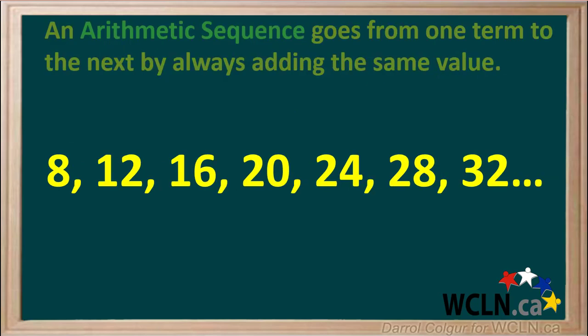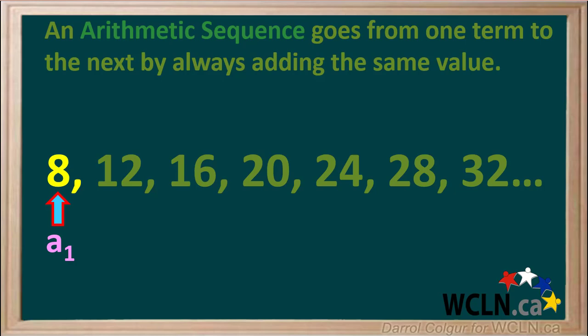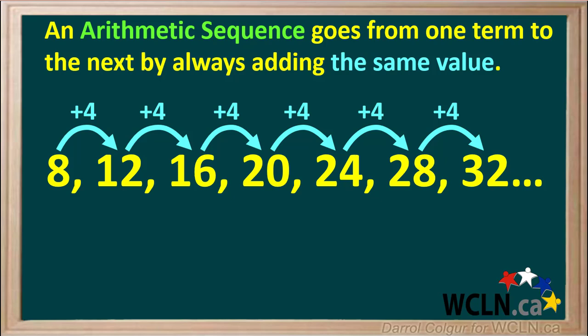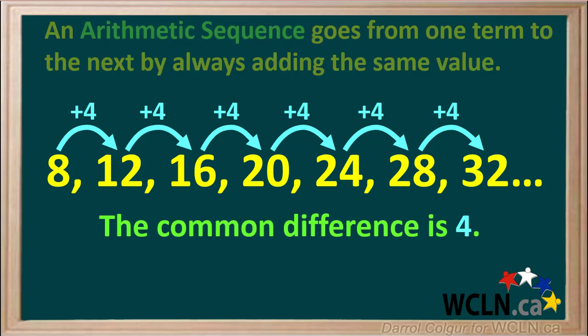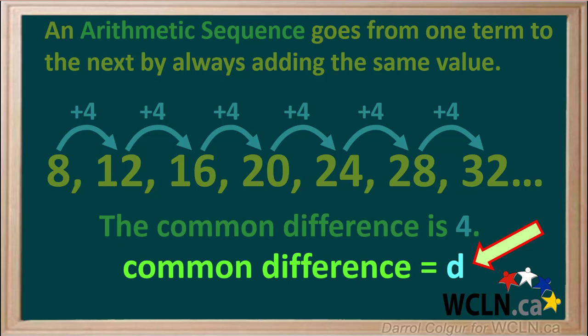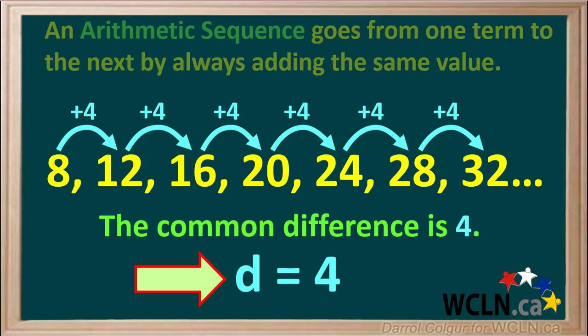Let's have a look at this sequence: 8, 12, 16, 20, etc. In this sequence, the first term a1 is equal to 8. You can see that we add 4 to each term to get the next term, so the common difference is equal to 4 — and when we write 4, we mean positive 4. The common difference in a sequence is denoted by the lowercase letter d. So in this example, the common difference d is equal to 4.